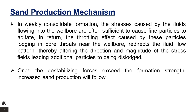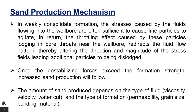As an example, a formation may produce sand-free when producing 100% oil. When water begins to flow through the matrix, the drag resistance of the water phase flowing past the water-wetted sand grains increases, causing the well to start producing sand. Water production also severely reduces formation strength due to the dispersion of amorphous bonding materials. The amount of sand produced depends on the type of fluid based on viscosity, velocity, and water cut, and the type of formation based on permeability, grain size, and bonding material.